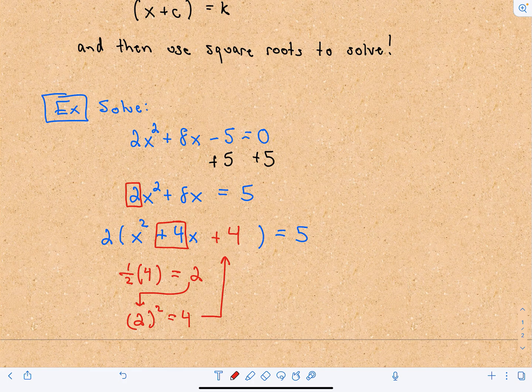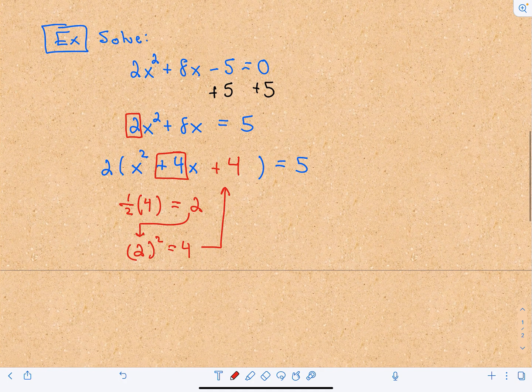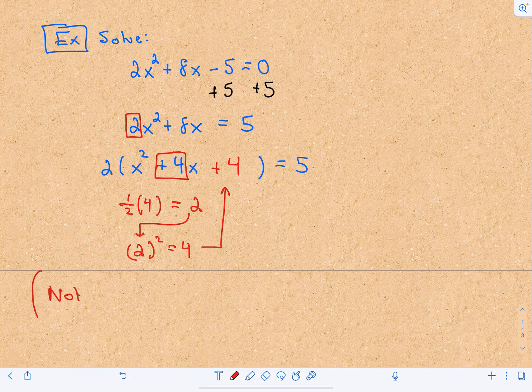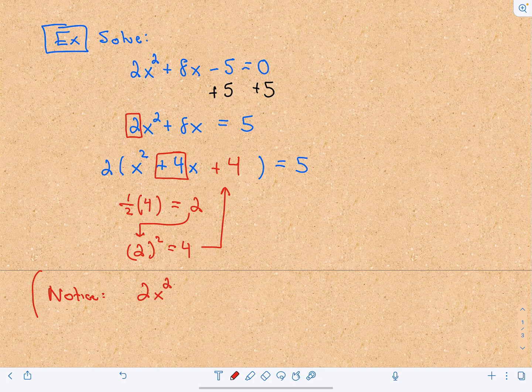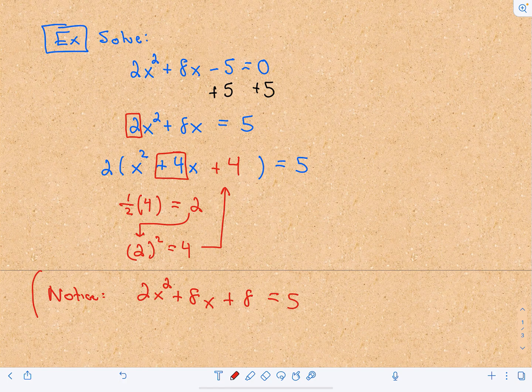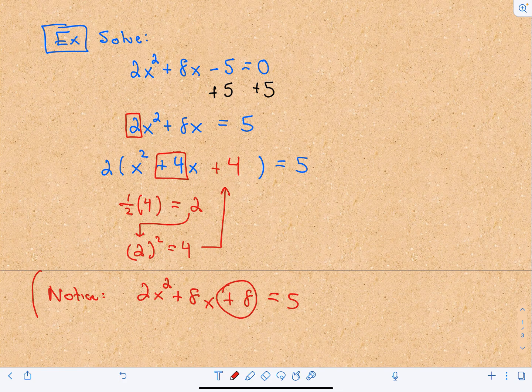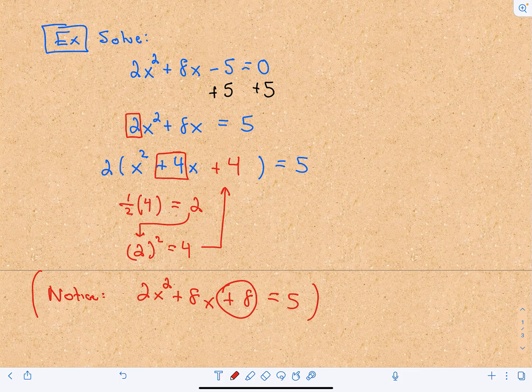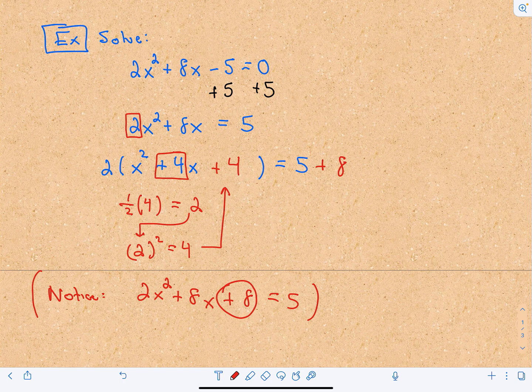We have to be careful because notice if we multiplied it out, we would have 2x² on the left, plus 8x, but then we would have a +8. And the +8 shouldn't be there. So we've got this +8 that's just showing up out of nowhere.